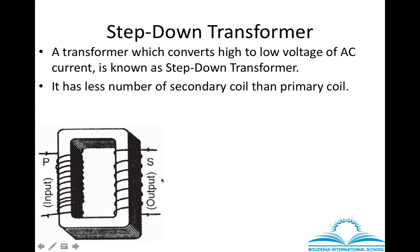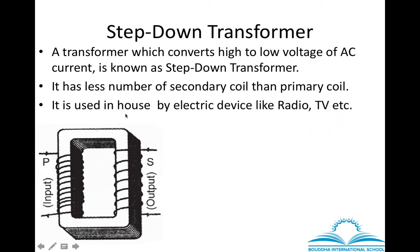A step-down transformer has fewer secondary coil turns than primary coil turns. It is used in houses because our homes require low voltage. Also, an important note: a transformer can only change the voltage of AC current — it cannot change the voltage of DC current.